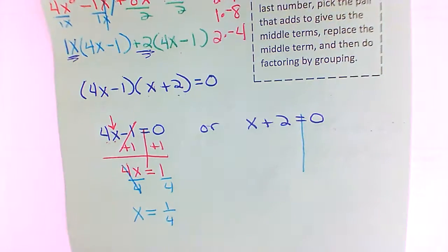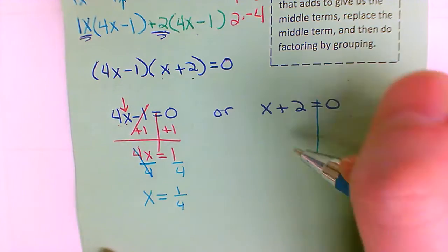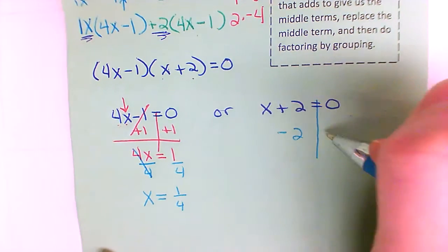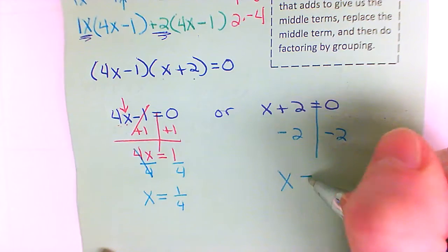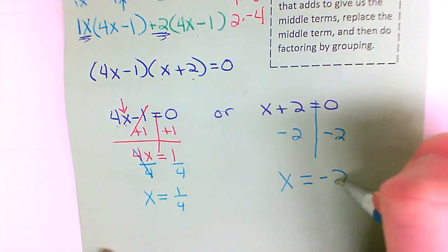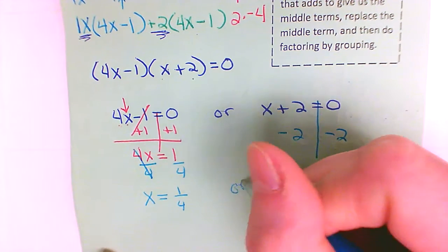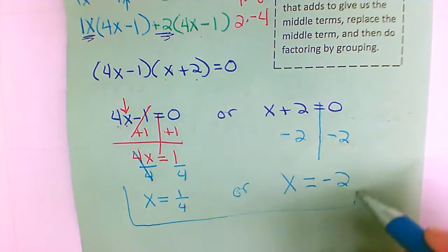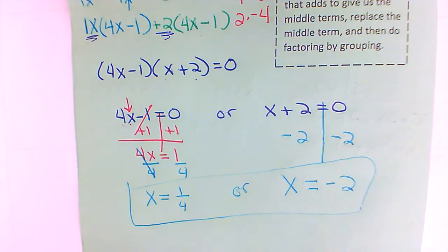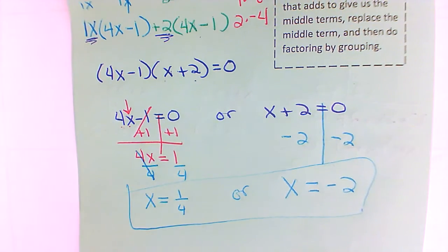For the other equation, it is just a one-step equation. I subtract the two, and now I've got x is equal to negative two. So I've got my two answers: one-fourth and negative two.